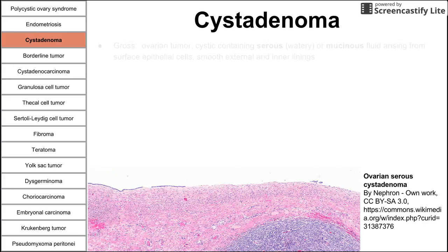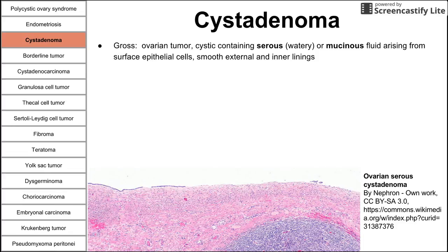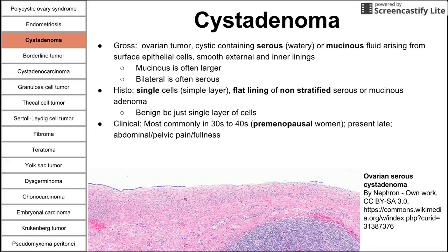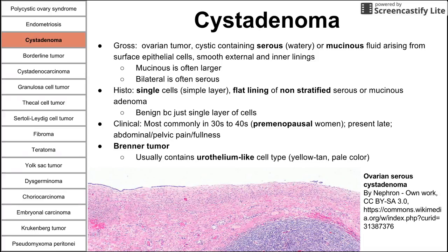Next is cystadenoma, a benign tumor that grossly presents as a cystic mass containing serous or mucinous fluid. This fluid arises from surface epithelial cells, with a smooth external and internal lining. Histology shows a flat, single-cell, non-stratified lining of serous or mucinous cells — it's benign because it's usually just a single layer. Clinically, these patients are in their 30s to 40s, premenopausal, and present late with abdominal fullness and pain. This is also related to a Brenner tumor, a similar-looking urothelium-like tumor that is yellow-tan and pale.